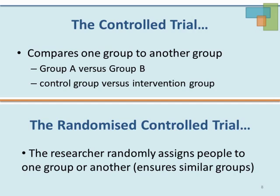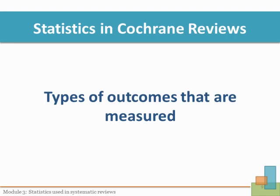Therefore, the randomized controlled trial is used primarily in Cochrane systematic reviews. The idea is to basically compare the differences between the group that received the intervention — say glucosamine — and compare them to the people who didn't receive the intervention, say a placebo pill. The differences can actually be measured in two ways.